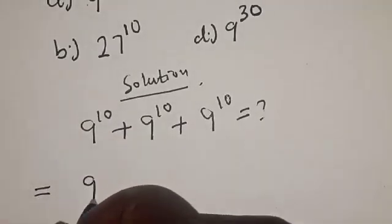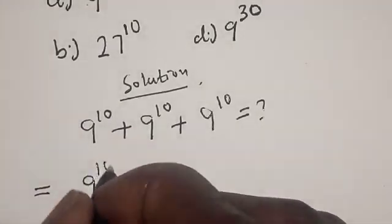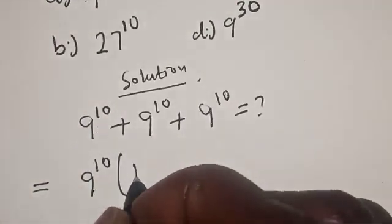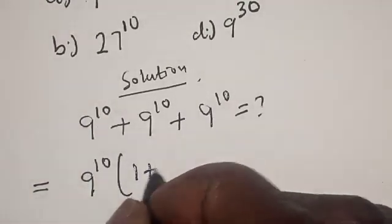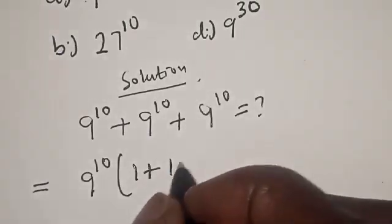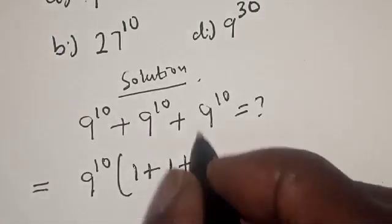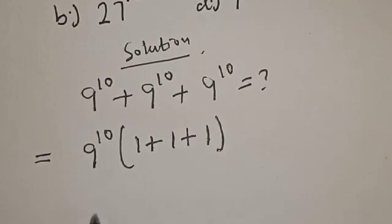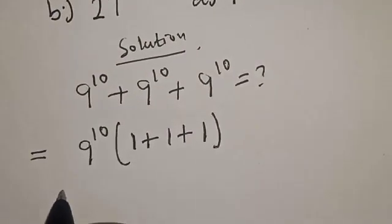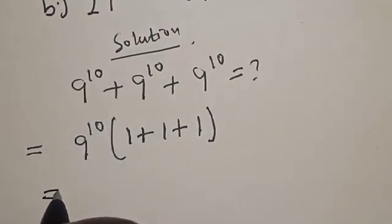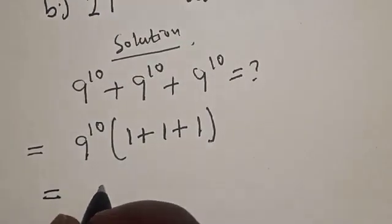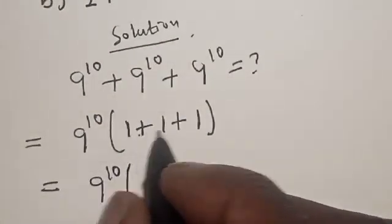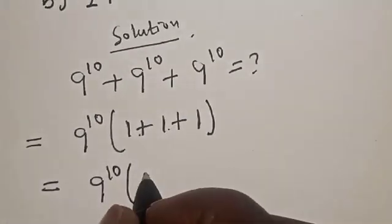This is equal to 9 raised to power 10 multiplied by — 9 raised to power 10 divided by itself gives 1, plus 1, plus 1. So this is equal to 9 raised to power 10 into 1 plus 1 plus 1, which is 3.